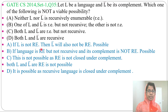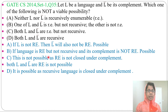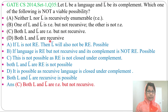To summarize: Option A is possible — if L is not recursive enumerable, then L-complement will also not be recursive enumerable. Option B is possible — if a language is recursive enumerable and not recursive, its complement is not recursive enumerable. Option C is not possible, as recursive enumerable language is not closed under complement, so both L and L-complement cannot be recursive enumerable. Option D is possible — both can be recursive. The only option that is not possible is Option C.